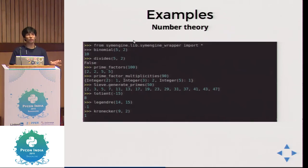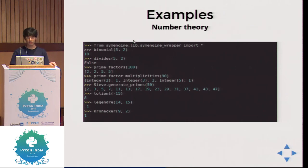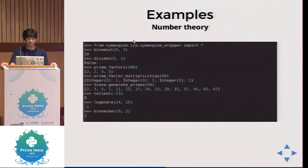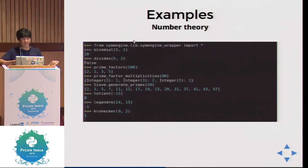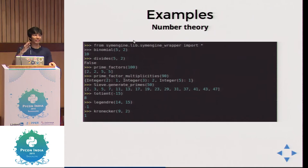The modules in SymEngine are few for now. Last year in GSOC, a student called Tilina implemented number theory and matrix modules — these are by far the best modules in SymEngine as of now. You have basic combinatorics: binomial(5, 2) gives 10 — that is 5 choose 2. The divides function tells if one number divides another — divides(5, 2) returns false. For number theory: prime_factors(100) returns [2, 2, 5, 5], and prime_factor_multiplicities(90) gives the factorization 2¹ × 3² × 5¹.